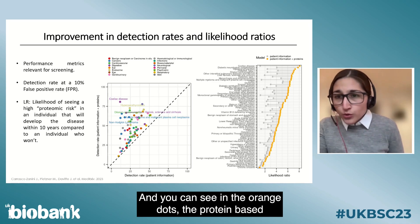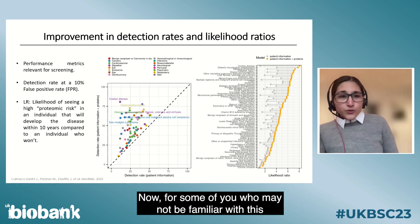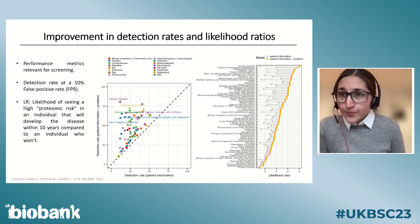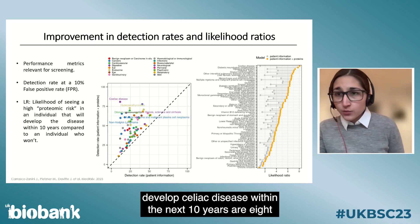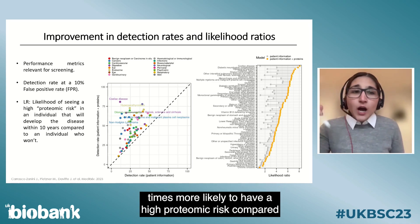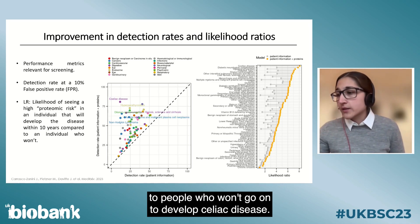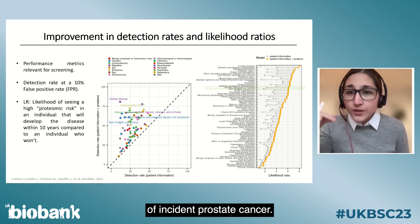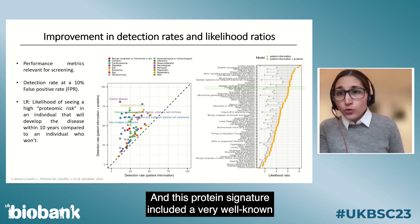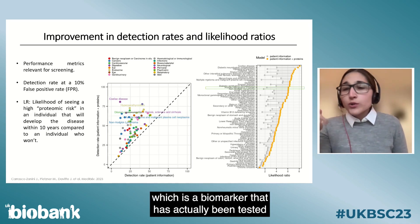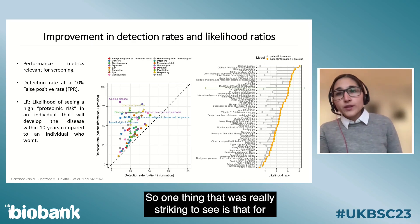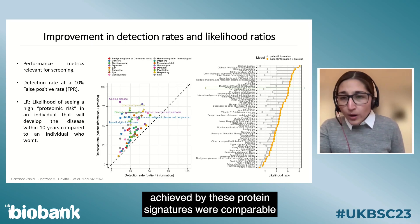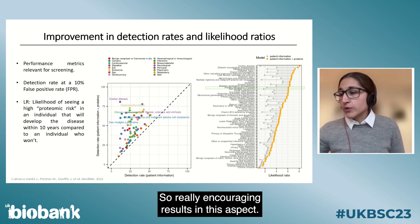The orange dots show protein-based models and the gray dots show clinical benchmarks. Taking celiac disease as an example — it achieved a likelihood ratio of 8 — this means people who will develop celiac disease within the next 10 years are 8 times more likely to have a high proteomic risk. Notably, for a wide range of diseases, the likelihood ratios achieved by these protein signatures were comparable to or even higher than that of prostate cancer using PSA, which has been tested in screening trials and clinical practice.